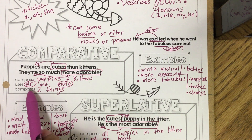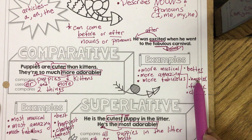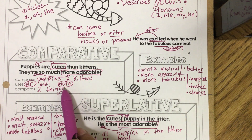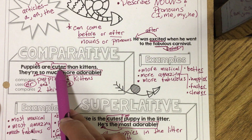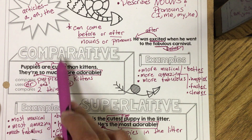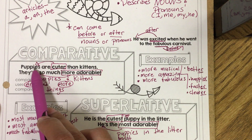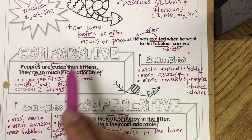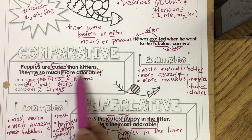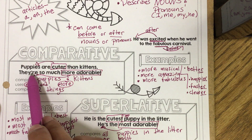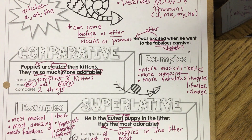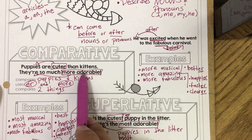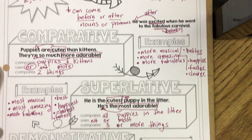Comparative adjectives end with -er, like better, happier, faster, clearer — or start with 'more': more musical, more amazing, more fabulous. Puppies are cuter — 'cuter' is the comparative adjective describing the puppies. They are so much more adorable — 'more adorable' starts with the clue word 'more.' They're describing the puppies as more adorable than kittens.